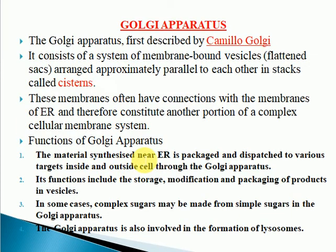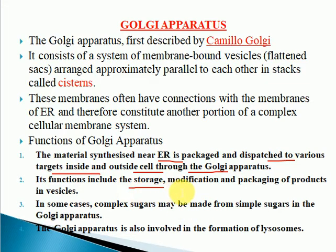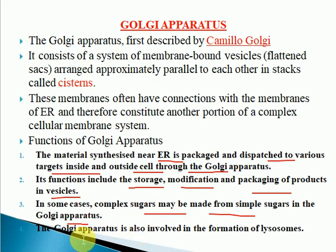The functions of the Golgi apparatus: the material synthesized near the ER is packaged and dispatched to various targets inside and outside the cell through the Golgi apparatus. Its functions include storage, modification, and packaging of products inside the vesicles of the Golgi. In some cases, complex sugars may be made from simple sugars in the Golgi apparatus. The Golgi apparatus is also involved in the formation of lysosomes.